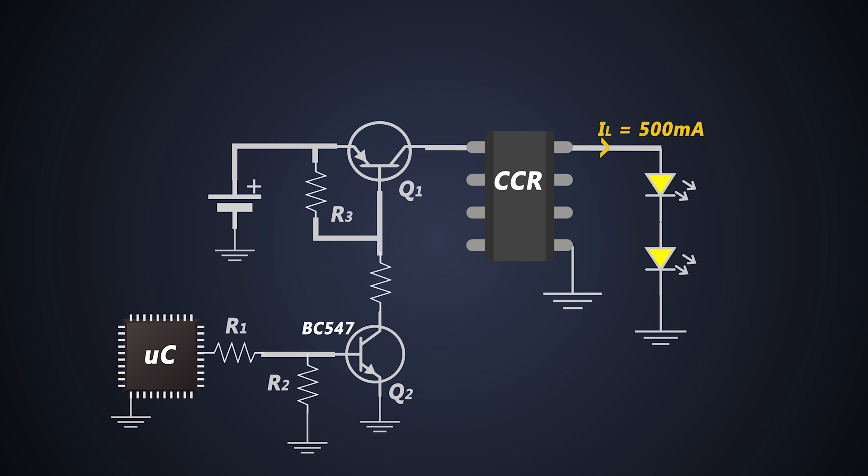But the PNP transistor which we are choosing must handle the load current. In our case the load current is 0.5A. So we will use a PNP transistor which can handle at least this much current.